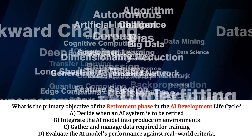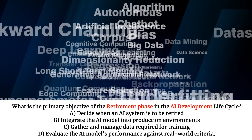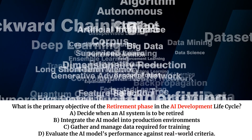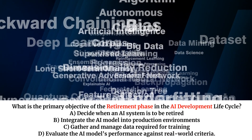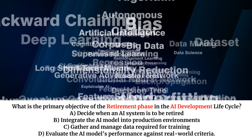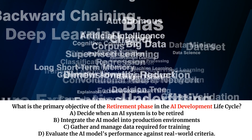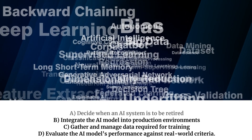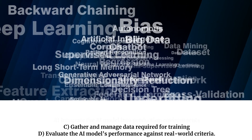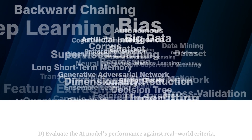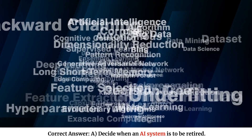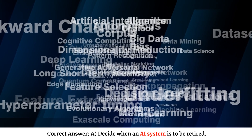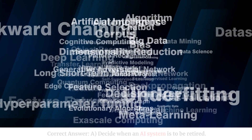What is the primary objective of the retirement phase in the AI development lifecycle? A. Decide when an AI system is to be retired. B. Integrate the AI model into production environments. C. Gather and manage data required for training. D. Evaluate the AI model's performance against real-world criteria. Correct answer: A. Decide when an AI system is to be retired.